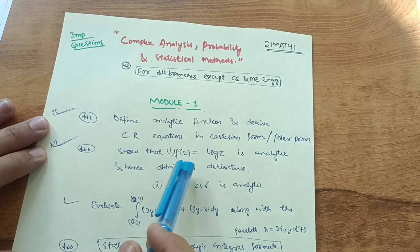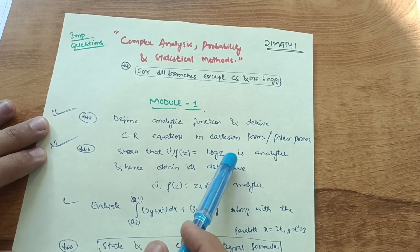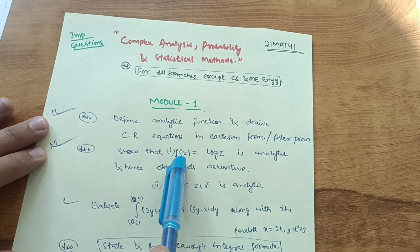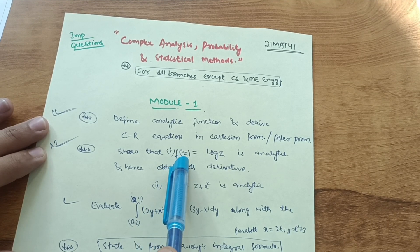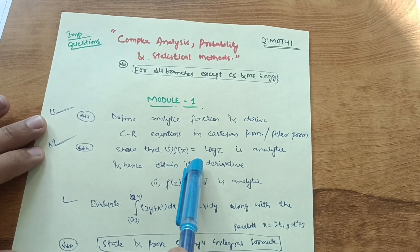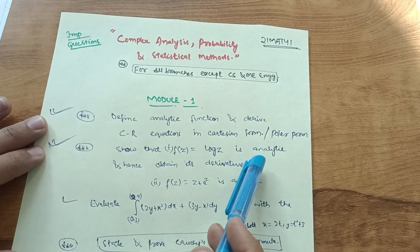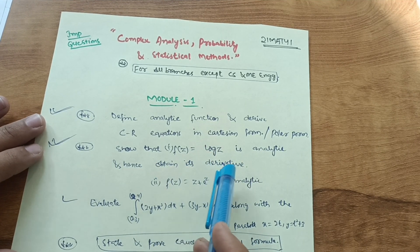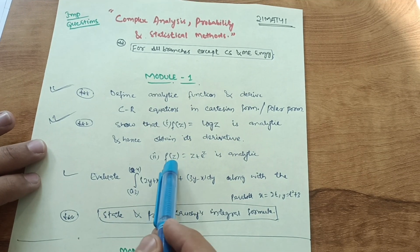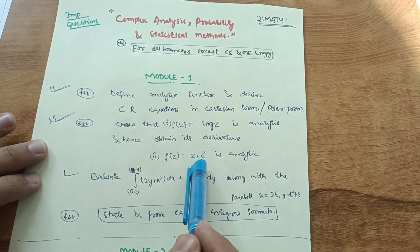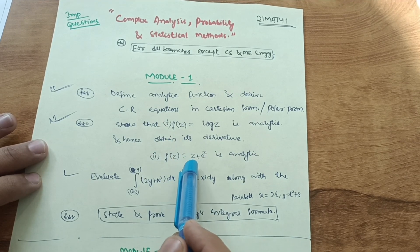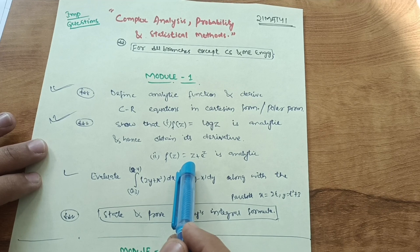The next important question is: show that f(z) = log(z) is analytic and hence obtain its derivative. This is most important — try three to four problems on this concept. Another example: show that f(z) = z + e^z is analytic. Focus on at least three to four problems to cover this concept well.